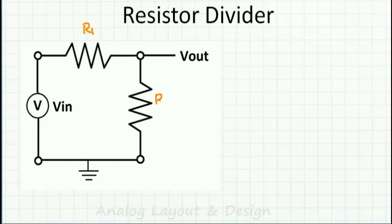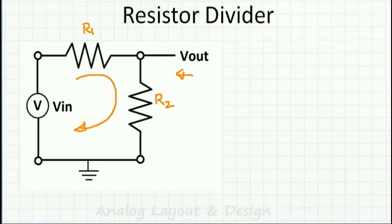Let's try and solve this simple resistor divider network. Let's call this resistor R1 and this one R2. Please pause this video and try to solve this for Vout. Now, when I ask this question to new college graduates, they generally give a wrong answer because they see the circuit from Vout and say it is a parallel circuit. Well, it's not like that. The same current I will flow through both resistors.